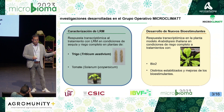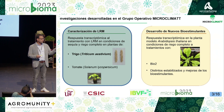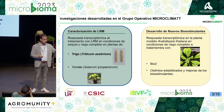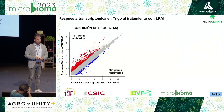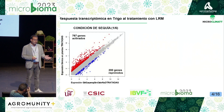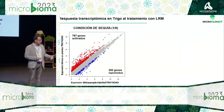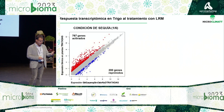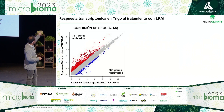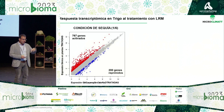Starting with wheat, the experimental design involved having plants subjected to drought and plants under complete irrigation, combined with foliar treatment by spraying the biostimulant. We extracted RNA, sent it for sequencing using RNA sequencing, and using high-performance computational techniques, we were able to estimate the expression levels in plants subjected to drought compared to untreated ones.